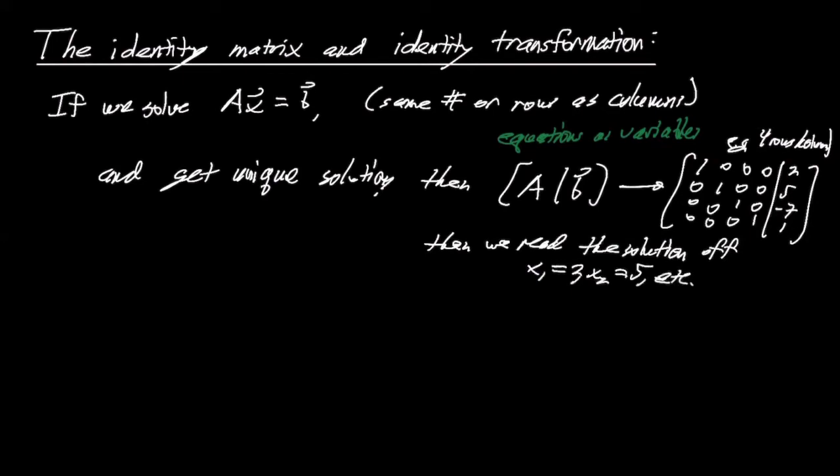And the point I want to make is that this thing right here is called the identity matrix. It's this square matrix with ones along the diagonal, zeros everywhere else. This is called the identity matrix. I guess it's the 4 by 4 identity matrix.